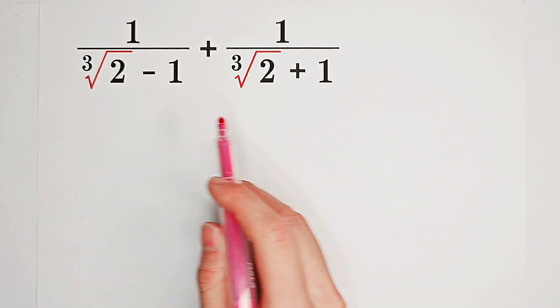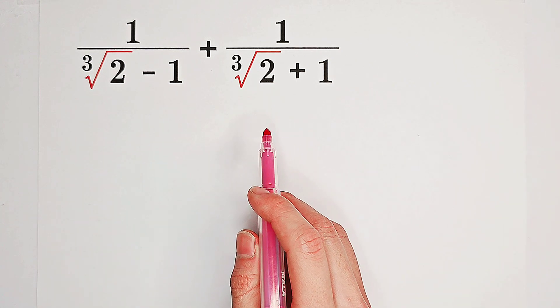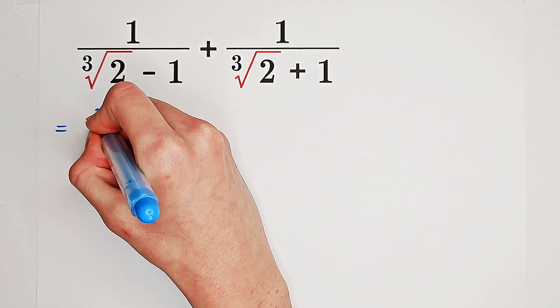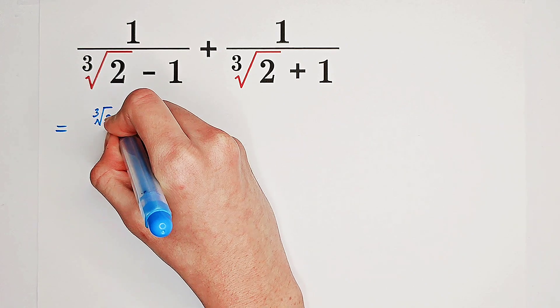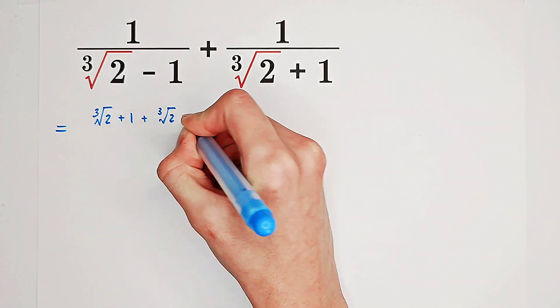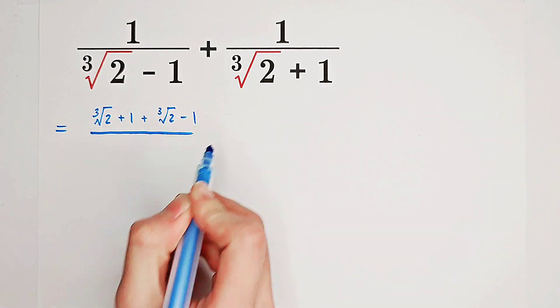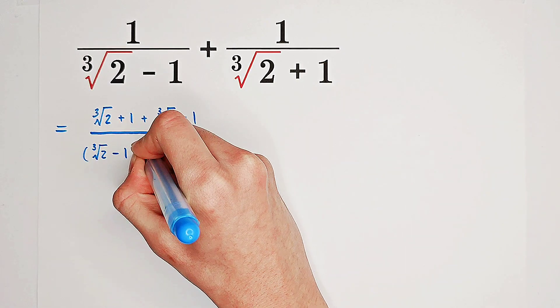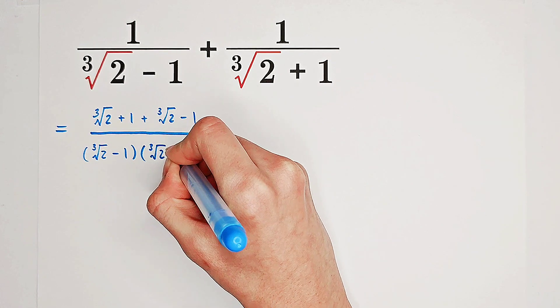Calculate 1 over the cube root of 2 minus 1 plus 1 over the cube root of 2 plus 1. What shall we do firstly? Now you see, the numerators are very complicated. Let's firstly add these two fractions together, and that is cube root of 2 plus 1 plus cube root of 2 minus 1, then over the product of these two denominators, cube root of 2 minus 1 times cube root of 2 plus 1.